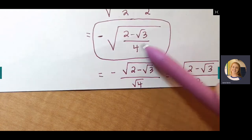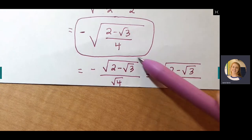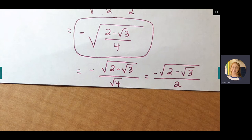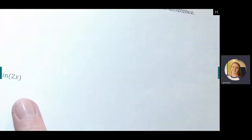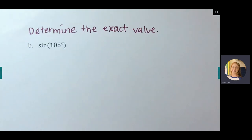So this answer should be fine, but just in case, they may want you to separate it since 4 is a perfect square. Now let's look at Part B, which is a sine problem — same directions: determine the exact value.